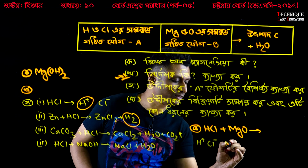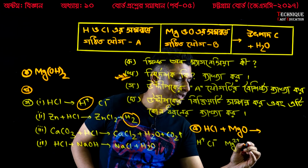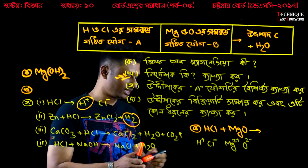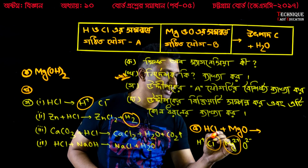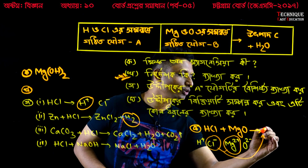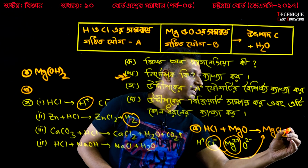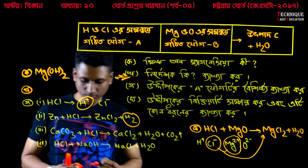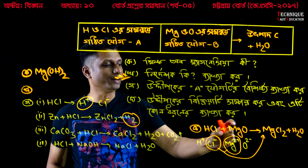Magnesium oxide — magnesium 2 plus, oxygen 2 minus. So, magnesium 2 plus reacts to give magnesium chloride, MgCl2. So magnesium chloride is MgCl2.